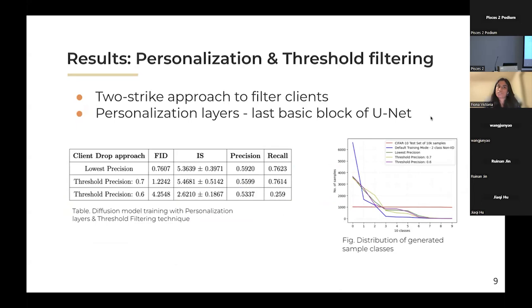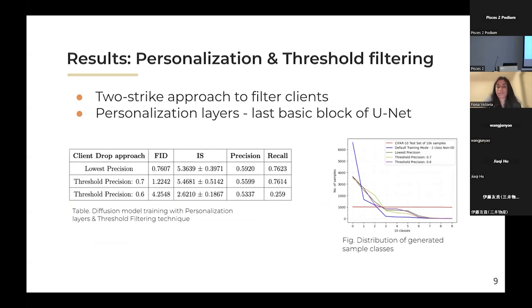The results for personalization threshold filtering show a similar distribution of generated samples that is also better than the default training mode, but not as strong as the data sharing results. One reason is that the two-strike approach to filtering clients can sometimes result in eliminating clients that were the only ones containing a particular class, which ends up decreasing the distribution of those classes. Although performance is much better than default training, it is still significantly lower than the data sharing strategy.